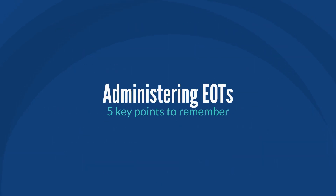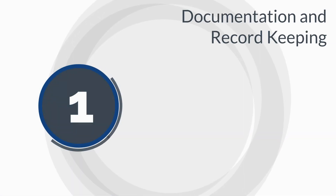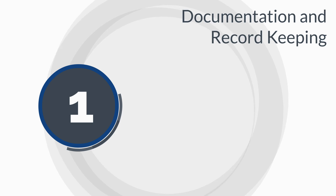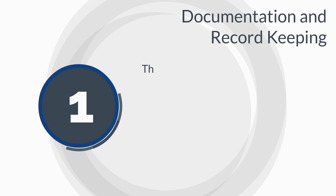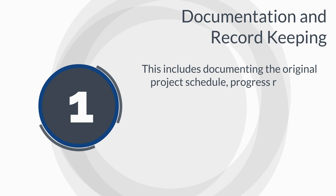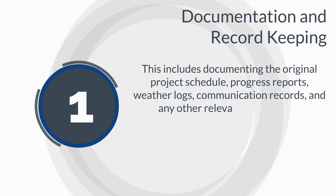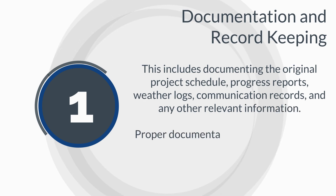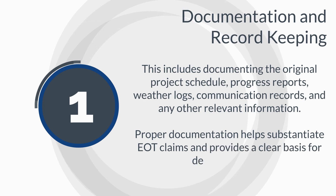Administering EOTs involves a structured approach to ensure transparency and fairness. Number 1: Documentation and Record Keeping. Maintaining accurate and detailed records is essential for administering EOTs. This includes documenting the original project schedule, progress reports, weather logs, communication records, and any other relevant information. Proper documentation helps substantiate EOT claims and provides a clear basis for decision making.